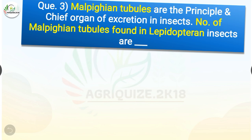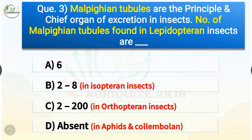Question number three: Malpighian tubules are the principal and chief organ of excretion in insects. The number of Malpighian tubules found in lepidopteran insects is — options are six, two to eight, two to two hundred, or absent. The correct answer is option A, six. It ranges from two to eight in isopteran insects, two to two hundred in orthopteran insects, and Malpighian tubules are absent in aphids and collembolans.